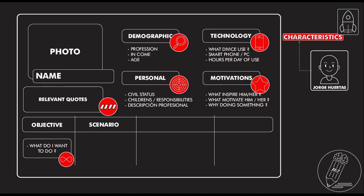It's also very important to know the objective of the person — what their plans are, what they want to do, and in which scenario they see themselves. This is very important because they may have plans for five or ten years, so understanding that and making a description of the place, space, and the actions they see themselves doing is key.